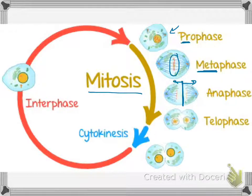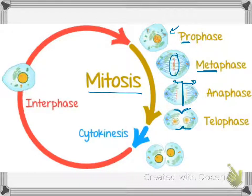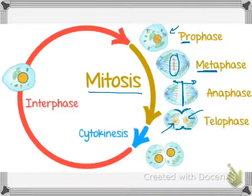In telophase, we actually have the beginning of that split happening. You can see that the cell membrane is making an indentation and getting ready to split into two cells. The nuclear membrane that holds the chromosomes is starting to form again. The final phase of cell division is called cytokinesis, and that is when the cell membranes go ahead and finish that splitting process so you end up with two different cells.